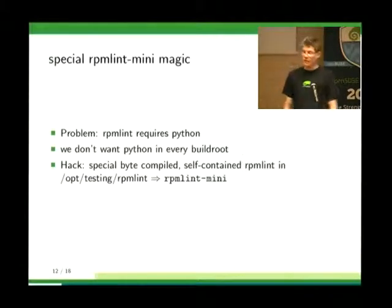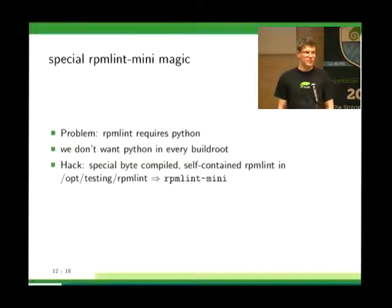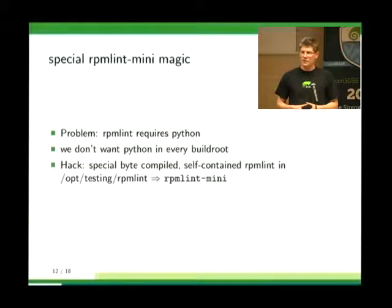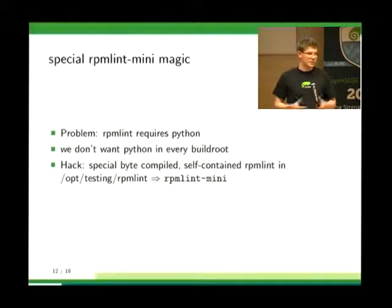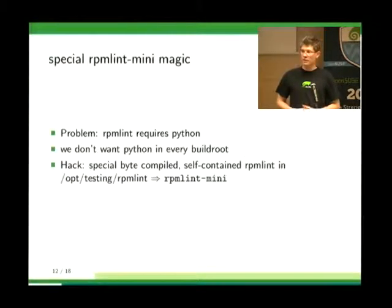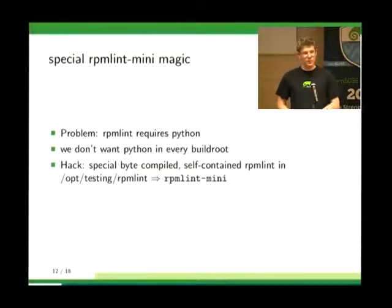The problem with RPM-Lint is that it's written in Python, and not every package build requires Python — we don't want to rebuild every package just because we use Python for packaging checks. So instead of the RPM-Lint package itself, we byte-compile its content and install it to opt-testing including the full Python, making it completely self-contained with no extra build requirements. The disadvantage is that config files have no effect in the build root — you need to edit the RPM-Lint Mini package and include the byte-compiled version of your tests. RPM-Lint Mini always has to be rebuilt before your package builds.